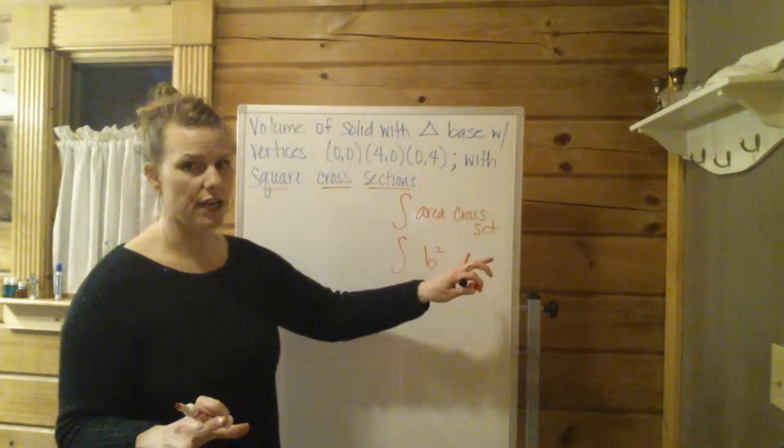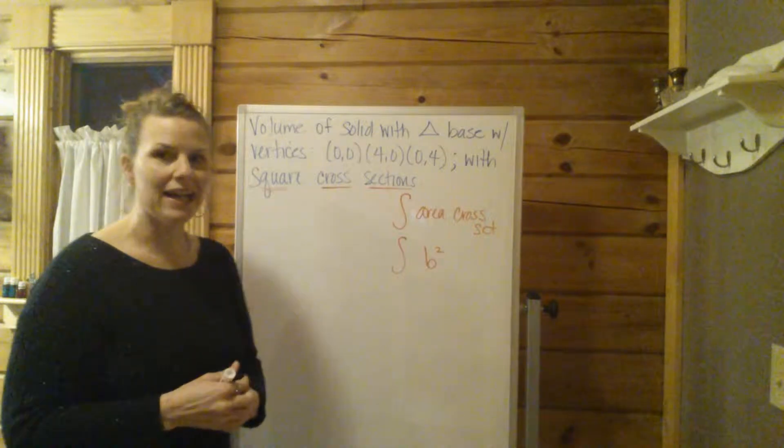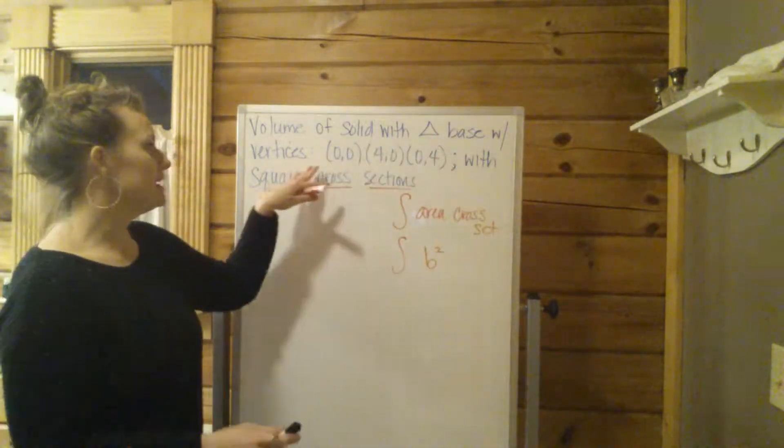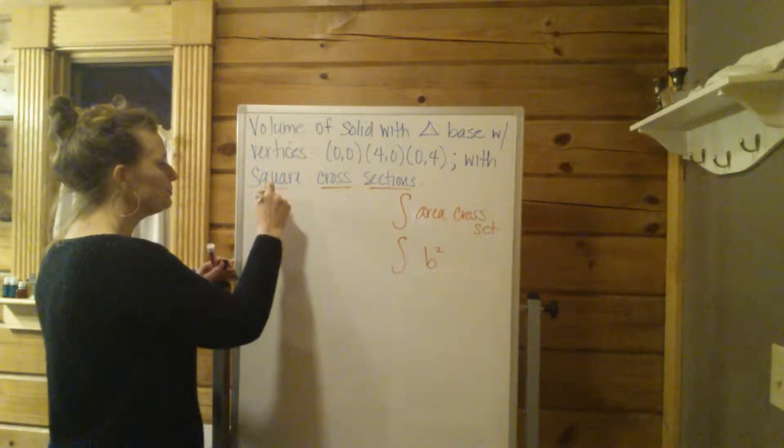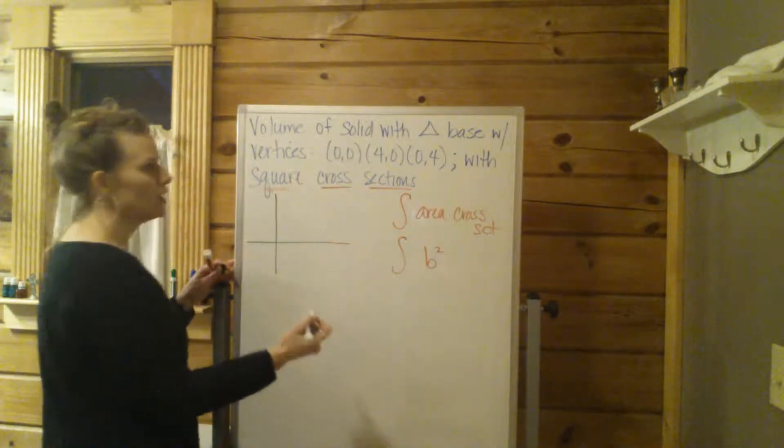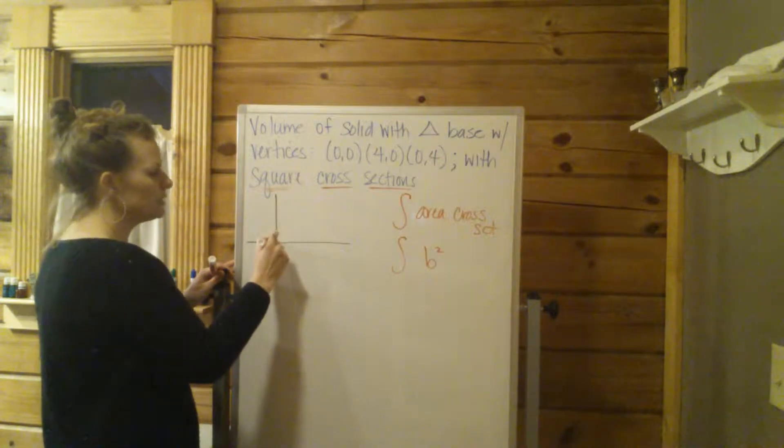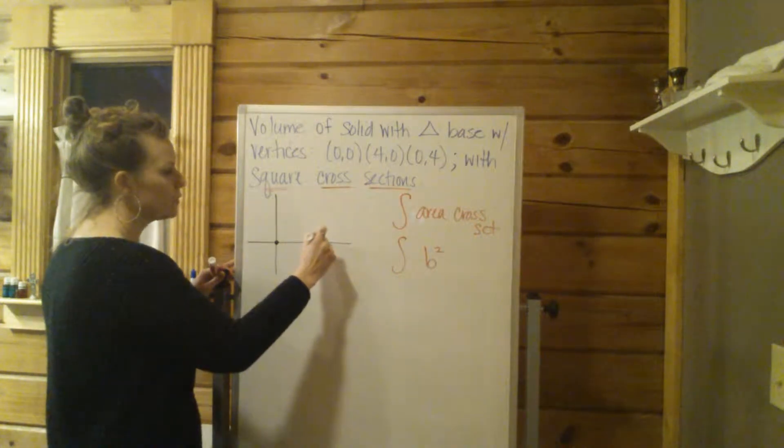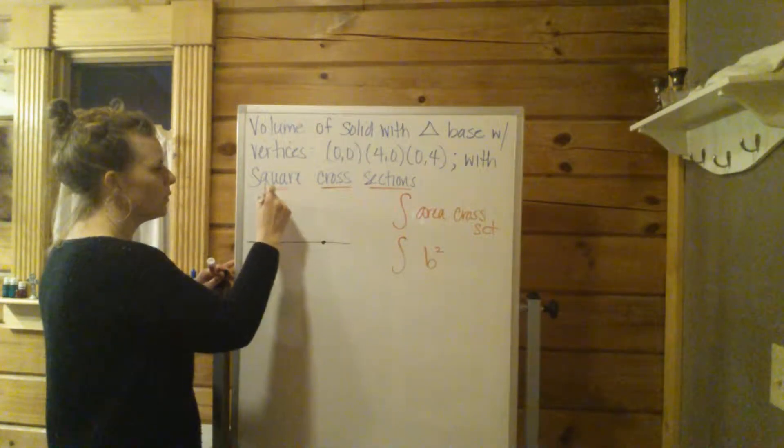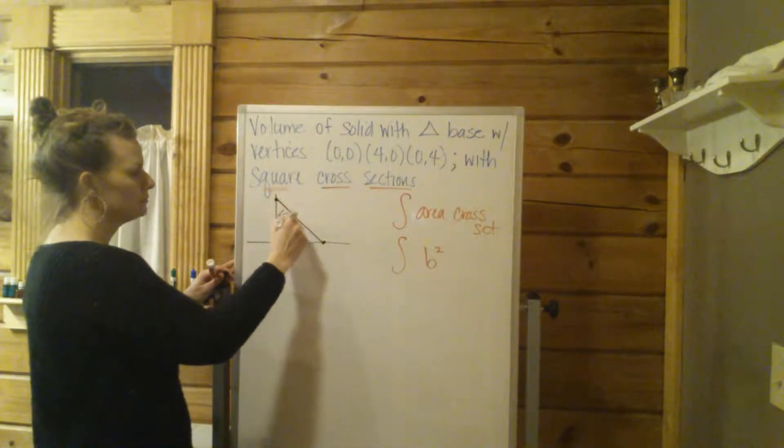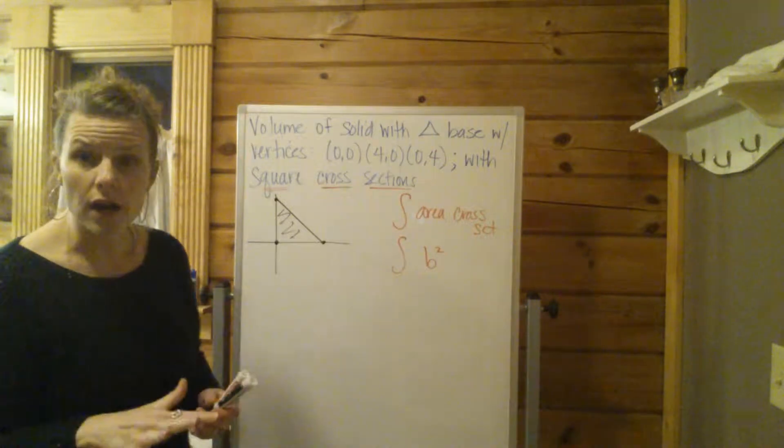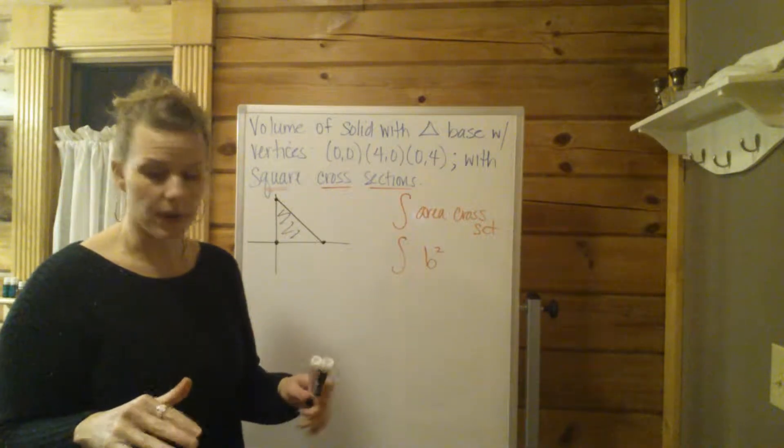That's where we're starting. Now, from that, we have to draw this base that they tell us, the base of the solid. They're telling us it's a triangle, and this we always put on a graph, whose vertices are 0,0, 4,0, and 0,4. So we're looking at this triangle right here. Okay, that's the floor. That's the floor of our solid.